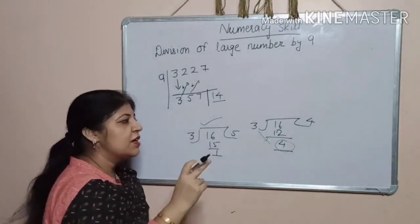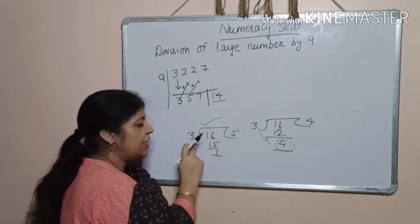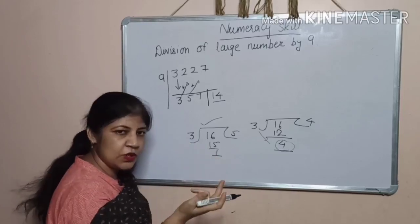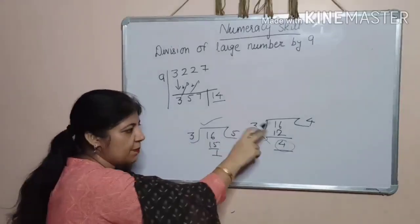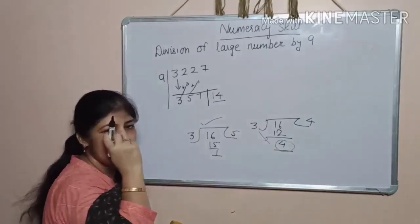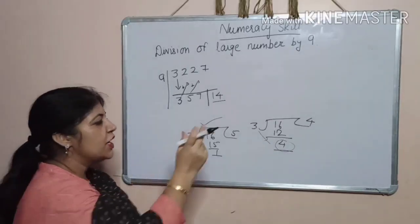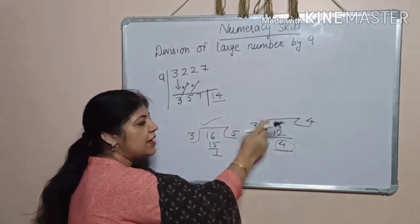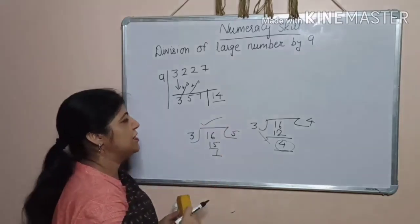Remainder is always less than the divisor or equal to 0 means when it is completely divisible, then remainder is 0. Otherwise, remainder is always less than the divisor.